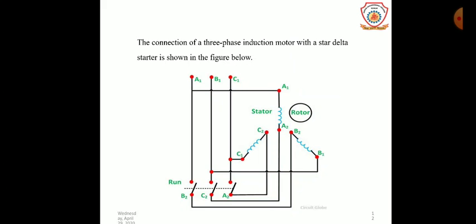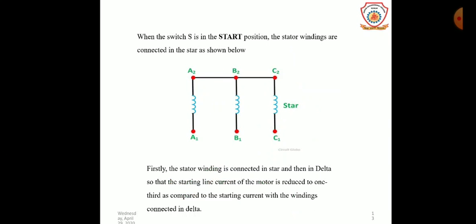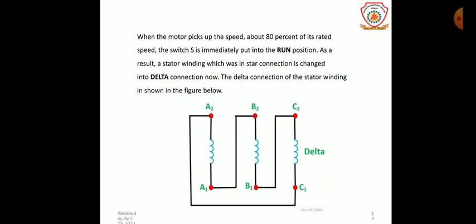The operation of the switch can be made automatic by using a relay, which ensures that the motor will not start with the switch in the run position. The cheapest of all and maintenance-free operation are two important advantages of this starter. When the switch is in the start position, the stator windings are connected in star combination, and then switched to delta combination. When the motor picks up speed to about 80% of its rated speed, the switch is immediately put into the run position, converting the star connection into delta connection.